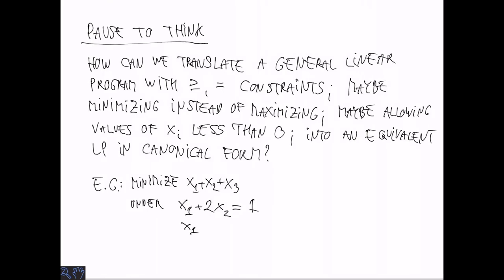So how do we do this? Consider the particular example here and think about how to translate these constraints into an equivalent linear program in canonical form, and also think about how this carries over to the general case.